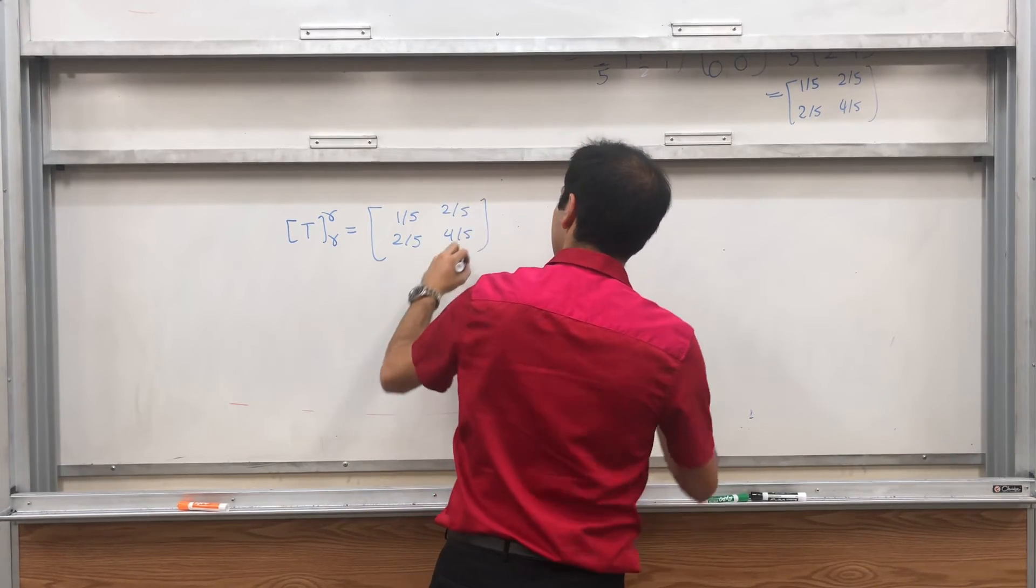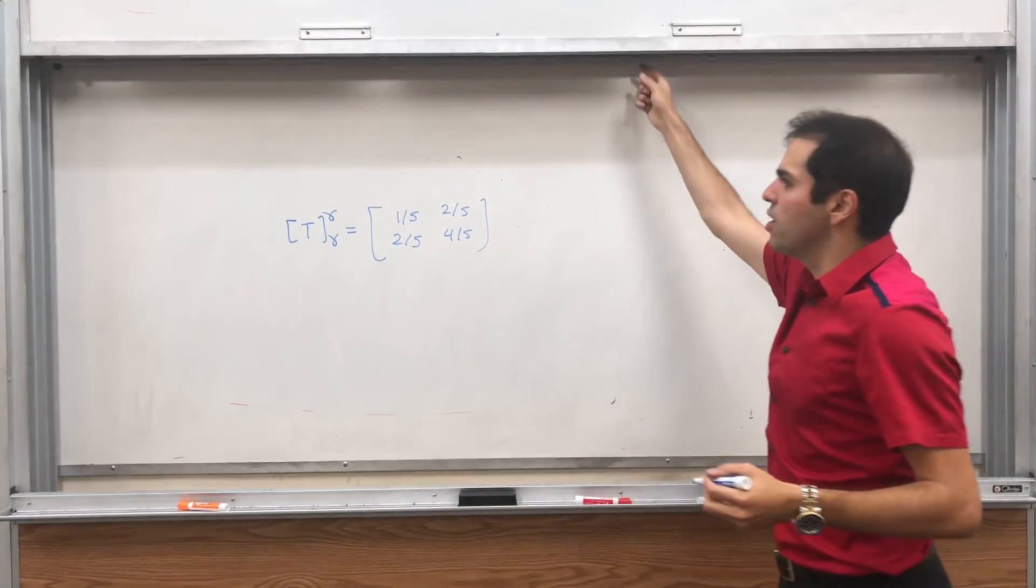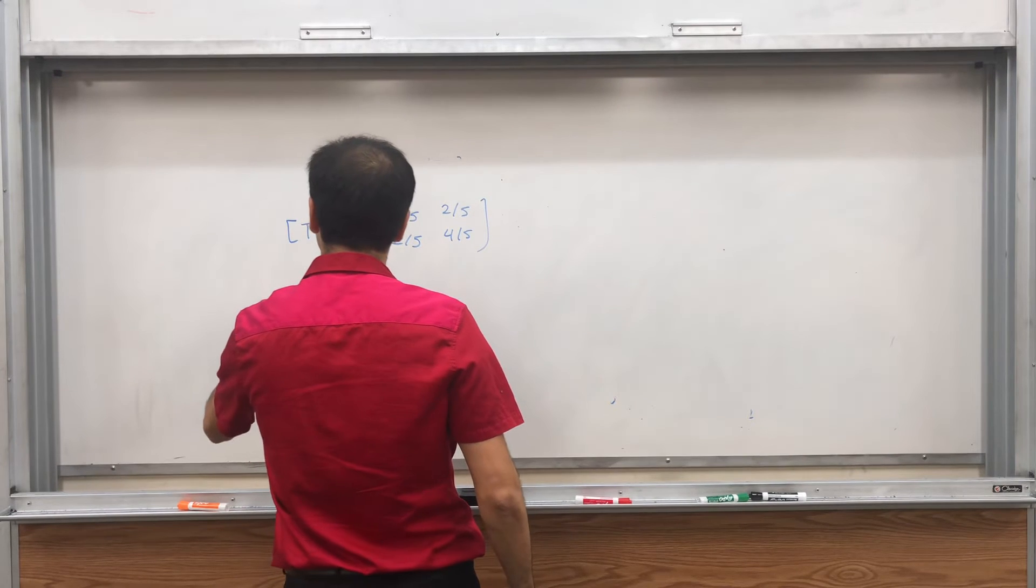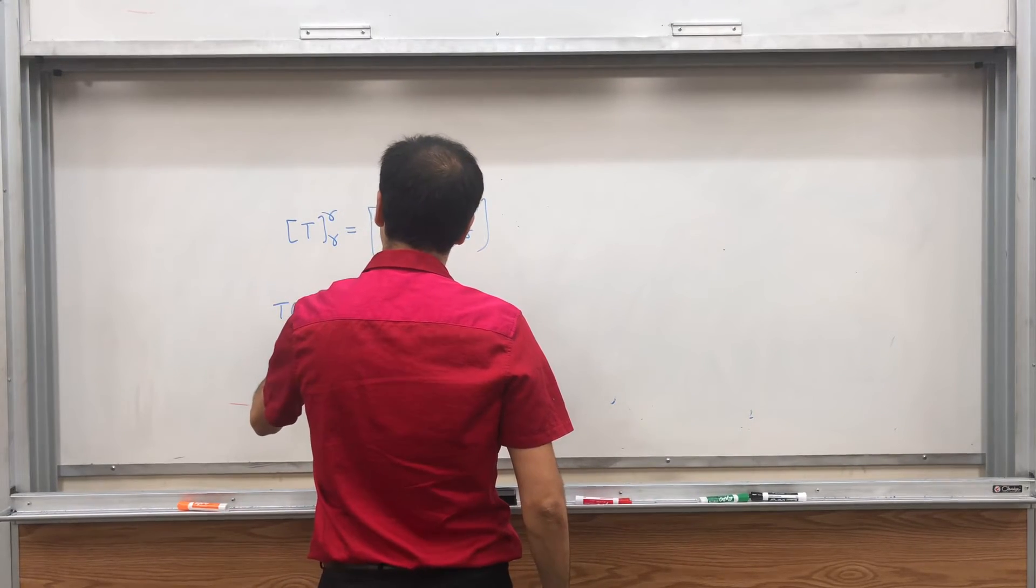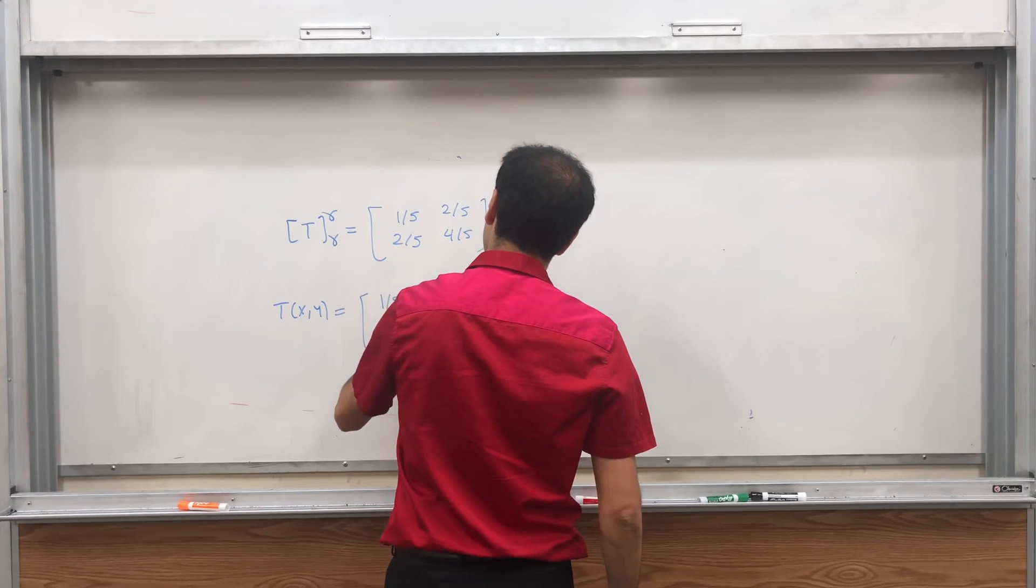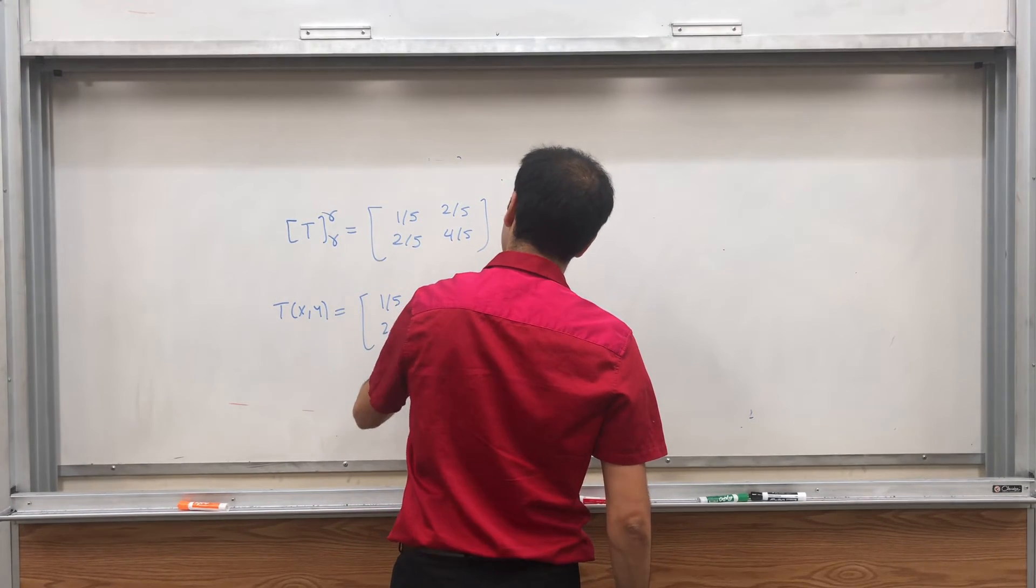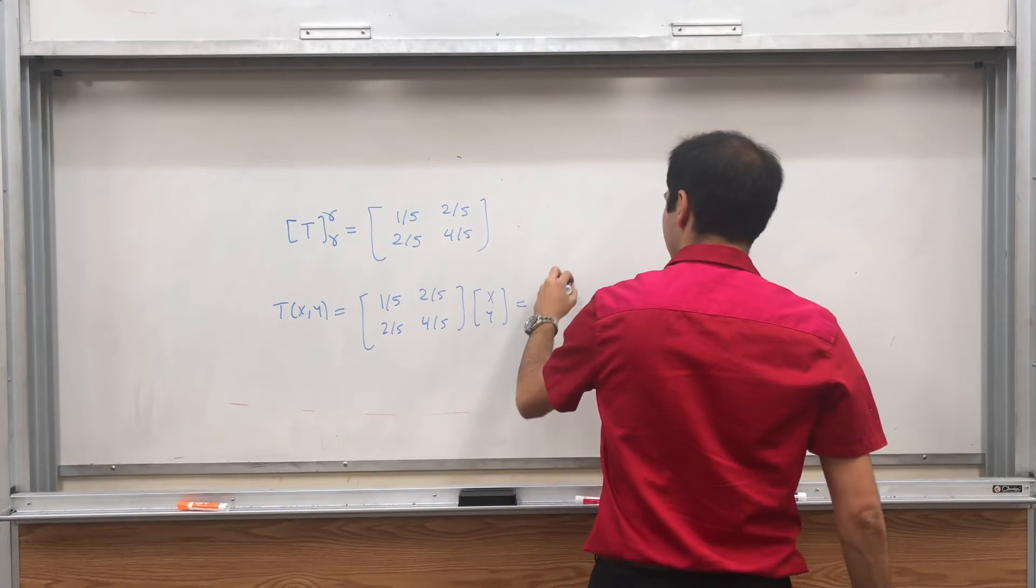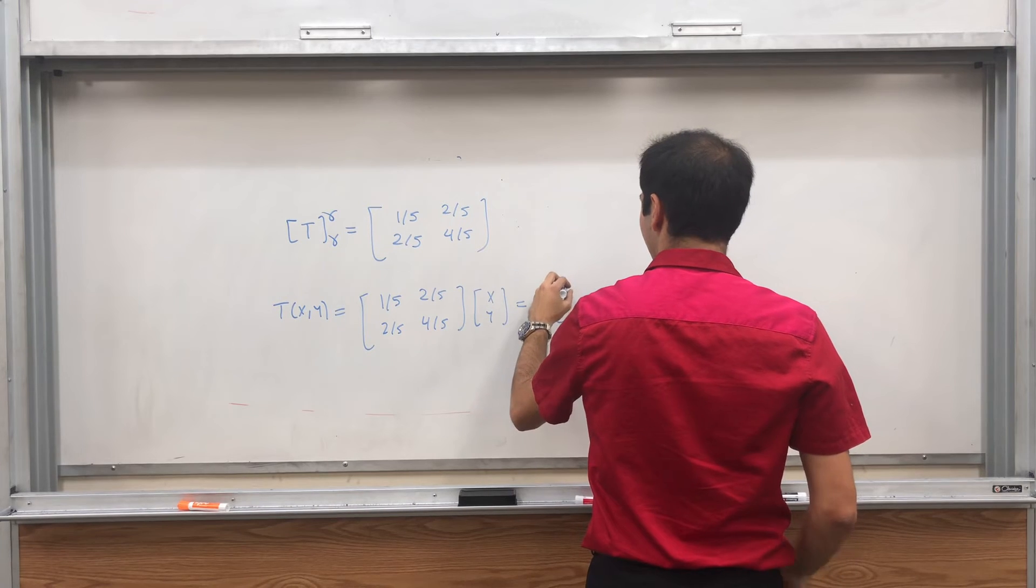And again the beautiful thing about using the standard basis is that we can figure out what T is. T of x, y is 1 fifth, 2 fifths, 2 fifths, 4 fifths, times x, y. And that becomes x over 5,